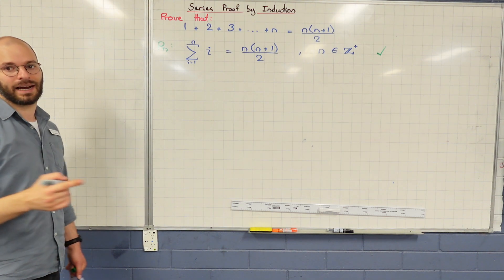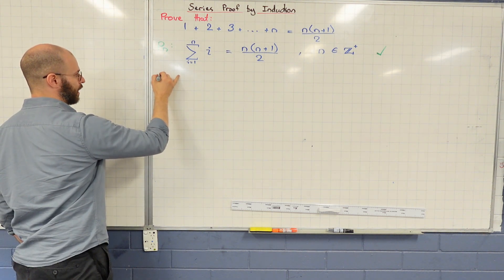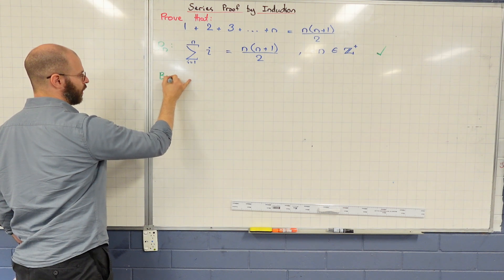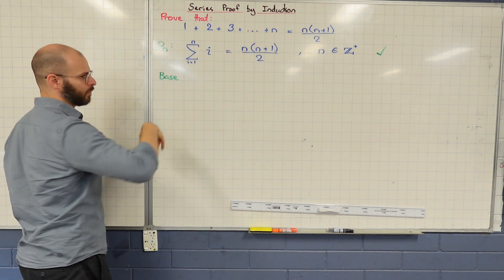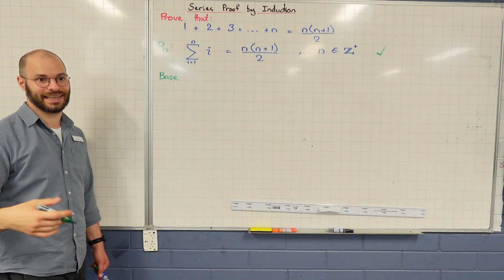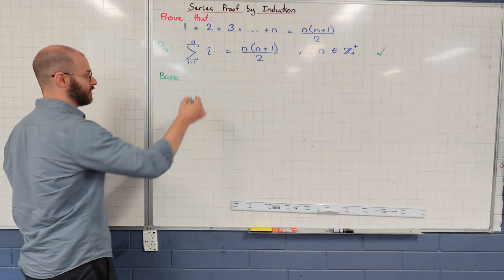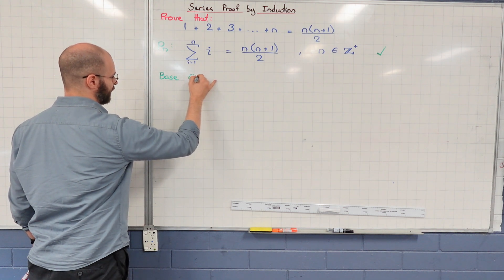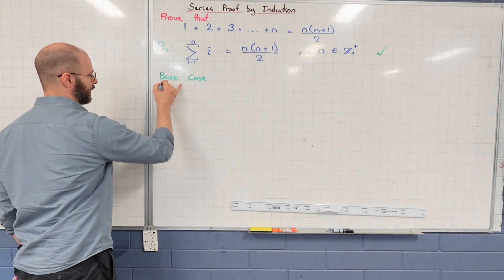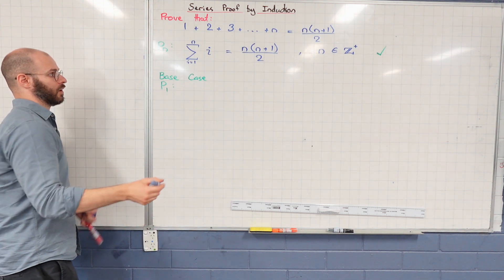After we've defined that P of n, we're now ready to actually get into induction. For induction, we always start with our base case. So we prove the first one works and then we do our inductive case where we assume the kth case is true and then prove that the k plus one case is true. So our base case is going to be proving P of one, not P of zero, P of one.